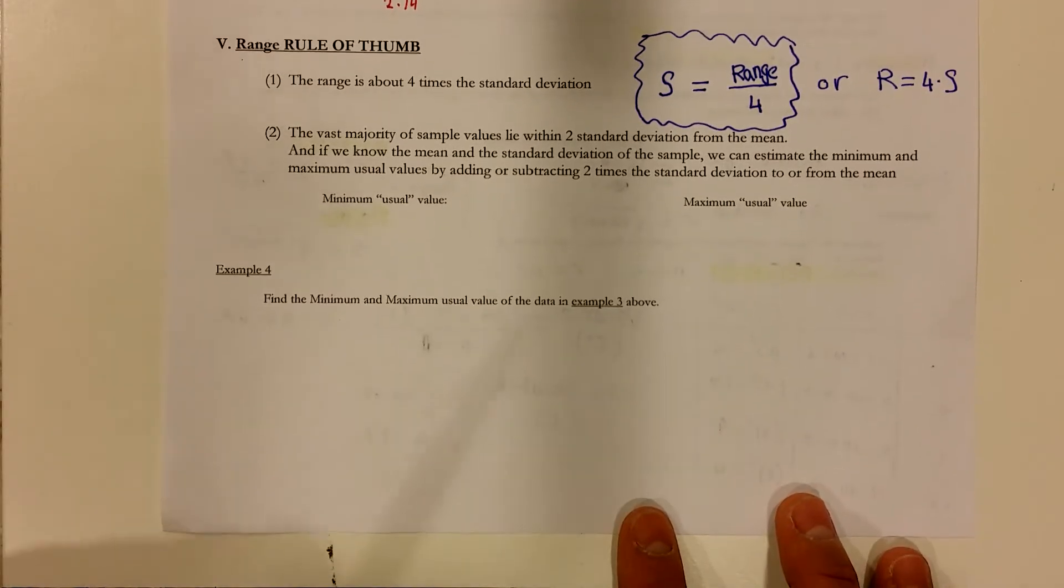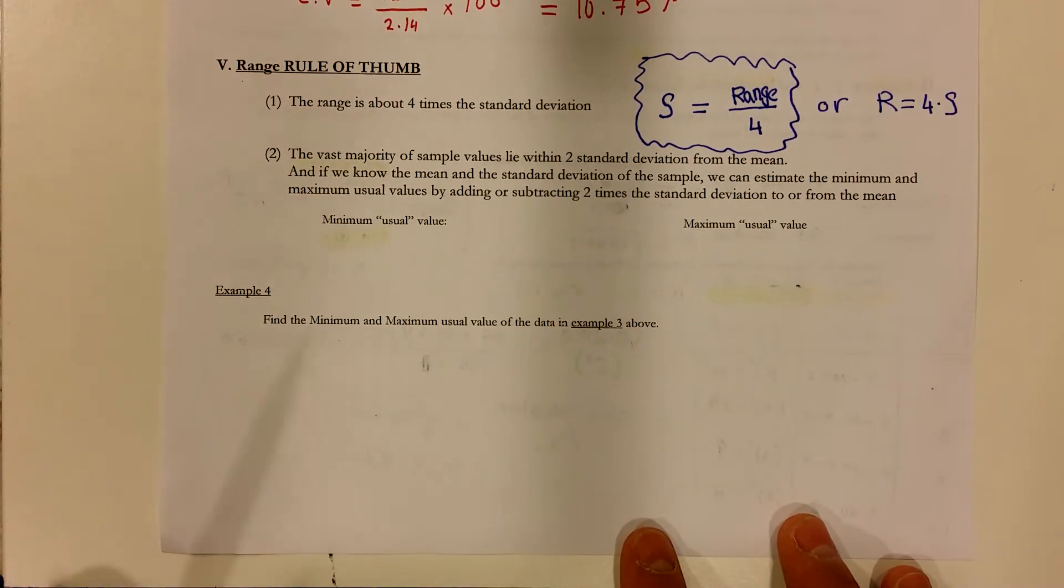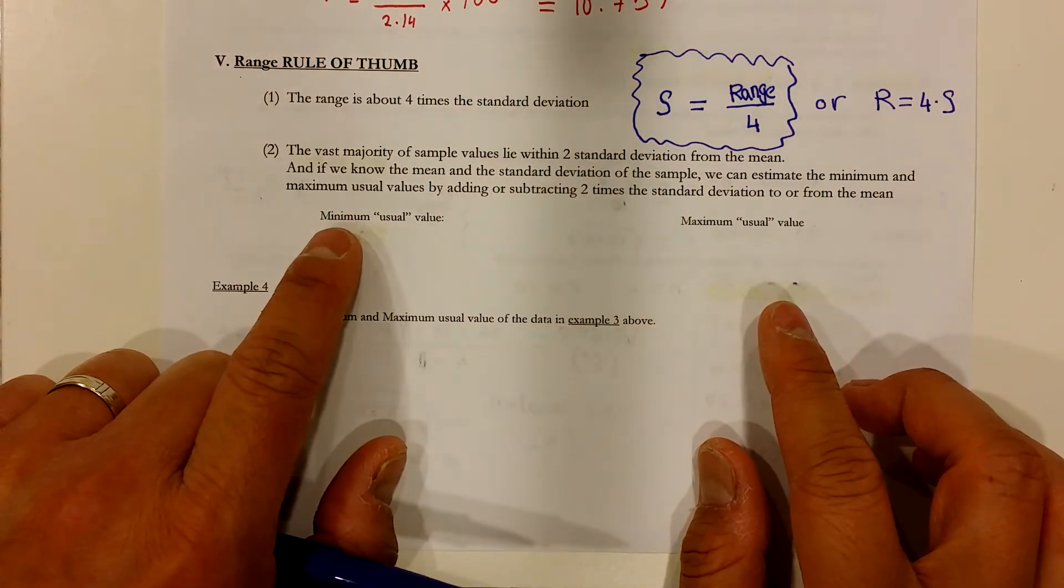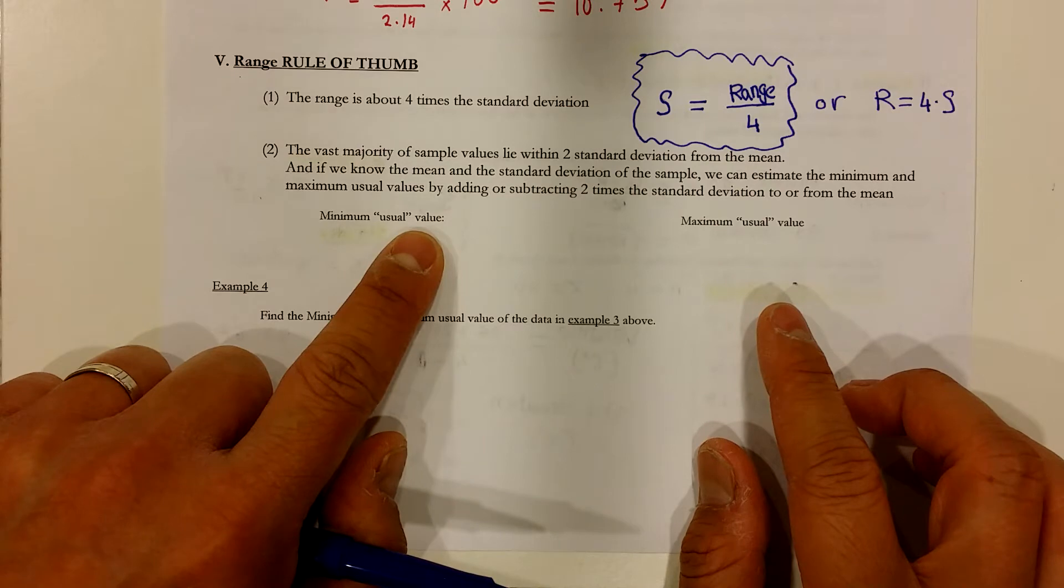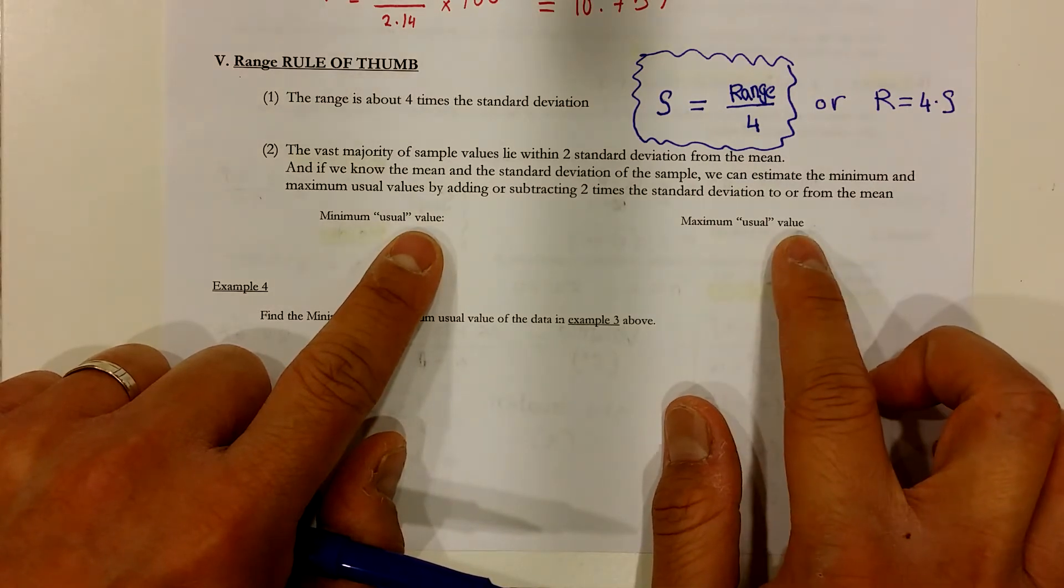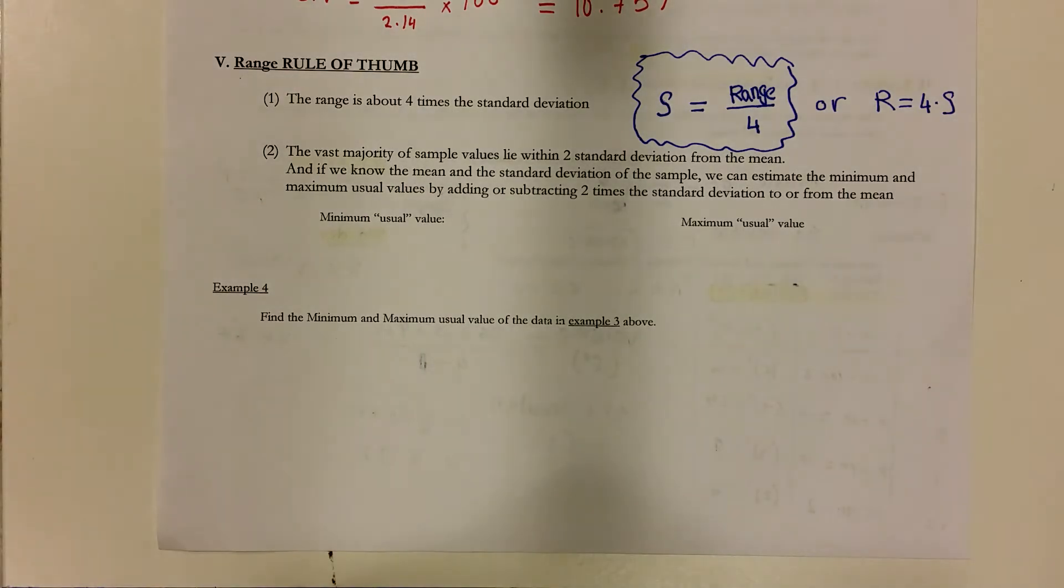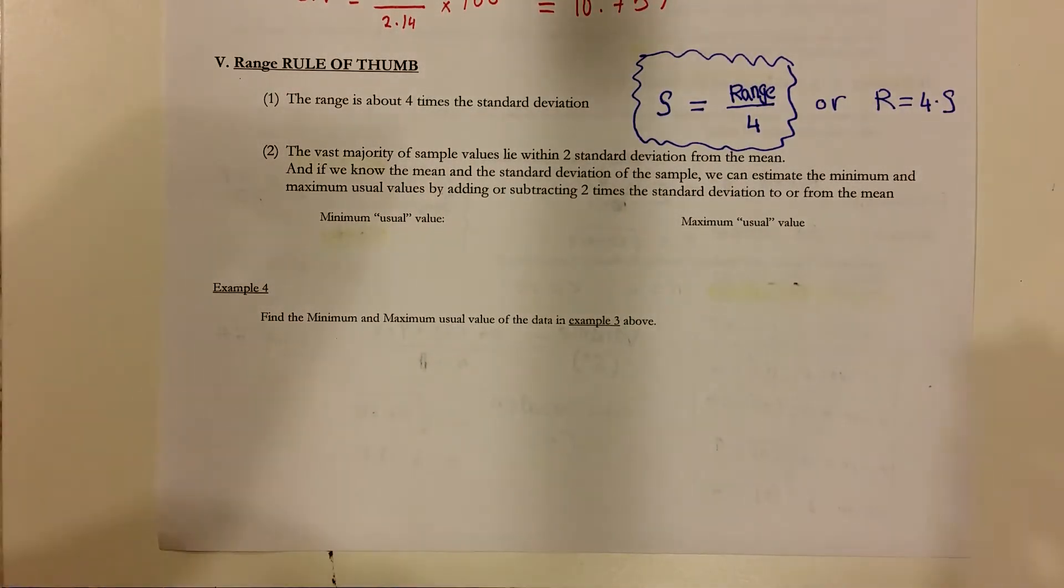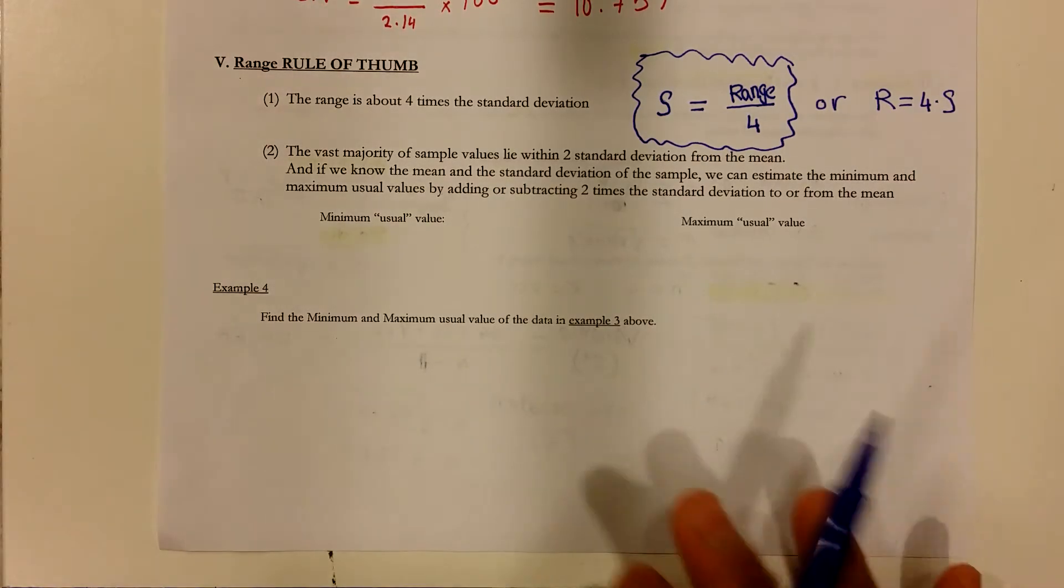And another big thing that I want you to get out from the rule of thumb is there is what we consider to be a minimum usual value and a maximum usual value. These are basically numbers that are considered to be acceptable. And so you might wonder, well, what do you mean by that?